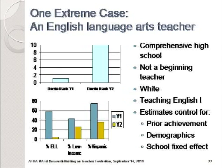This is a particularly dramatic case from the Newton et al. study, showing how an experienced high school teacher received wildly different effectiveness ratings teaching the same course to two groups of students, even with statistical controls for school and for student demographics in addition to statistical controls for prior year test scores. The year-one class included higher proportions of low-income Hispanic and English learner students, and with that class, the teacher's effectiveness ranking was at the bottom of the distribution. The next year with a more advantaged class, it was at the top. The message here is that the statistical controls simply did not work.